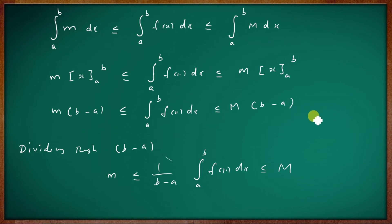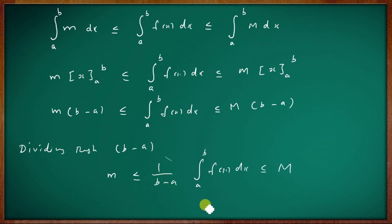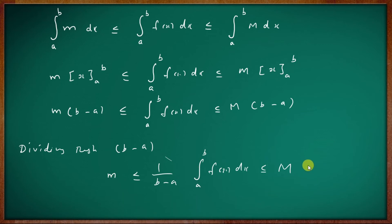This is the division step. Dividing throughout by (b−a) gives m ≤ (1/(b−a)) ∫ₐᵇ f(x) dx ≤ M. If you then apply the intermediate value theorem, it connects the inequality to the existence of x₀.